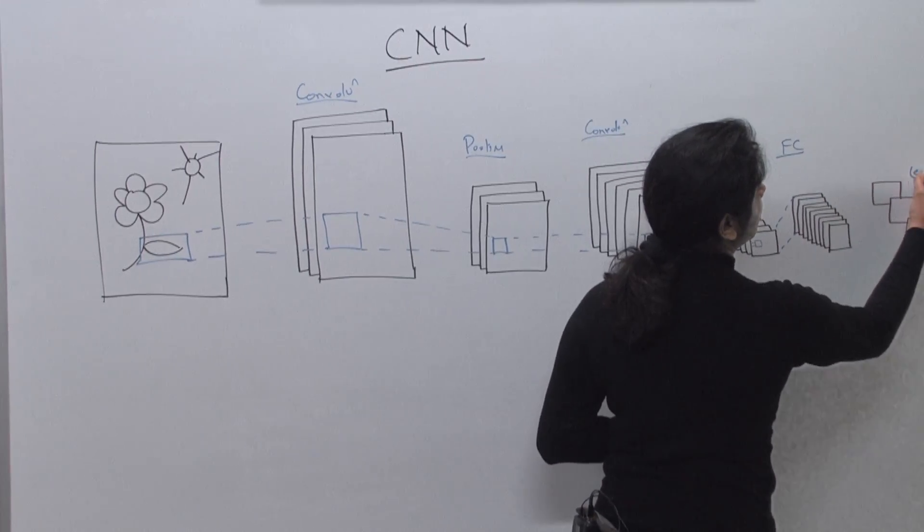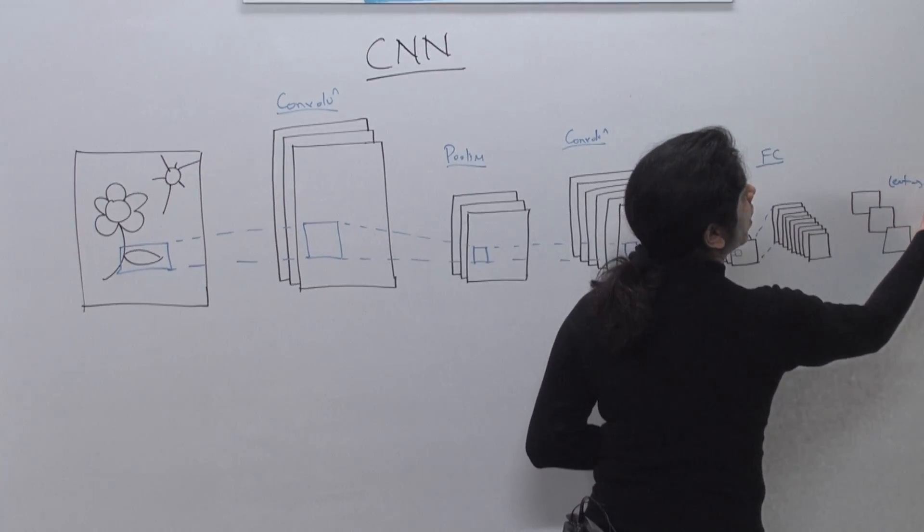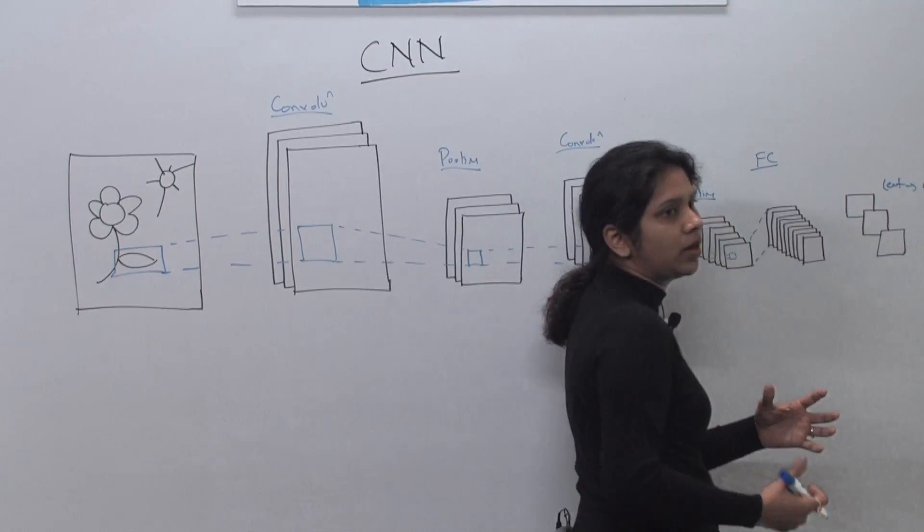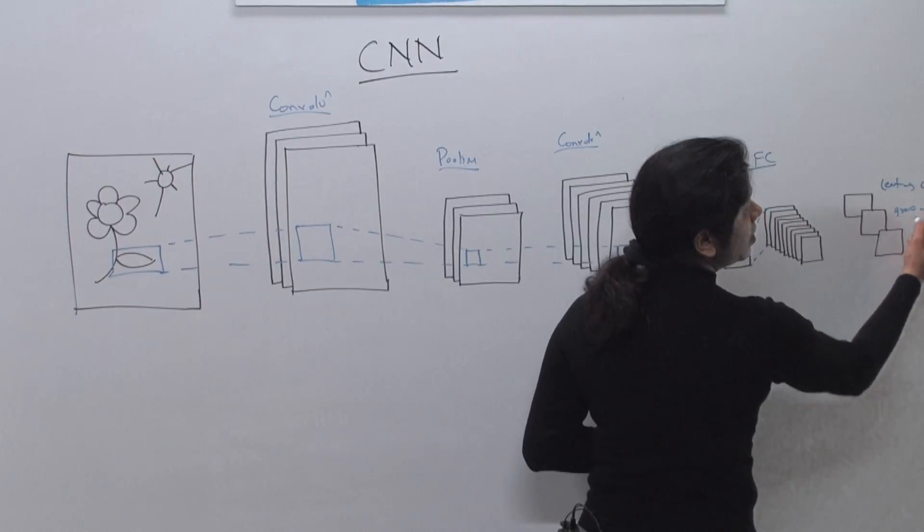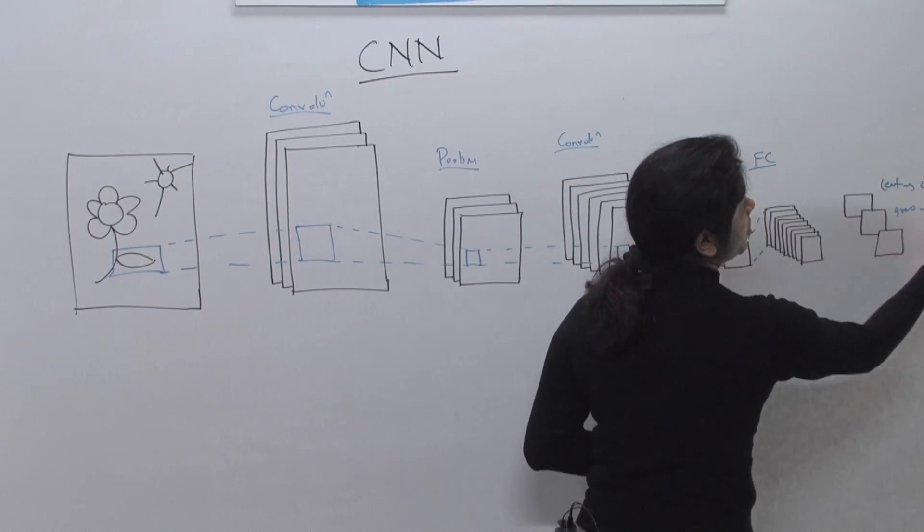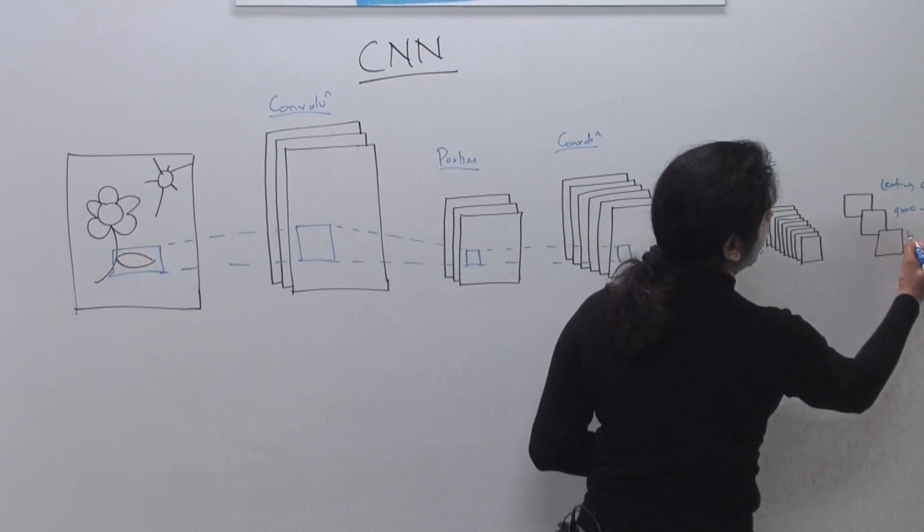So in this case, it will come up with, let's say, leaf and say, okay, 0.97%, or 97%, it's a leaf. It can say it's grass, and let's say it gave it a probability of 0.02. Or it said, okay, it's a bush.